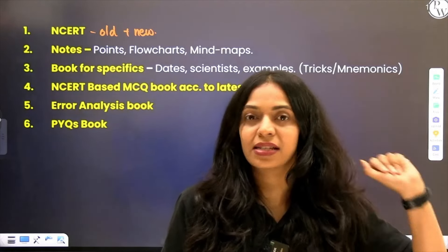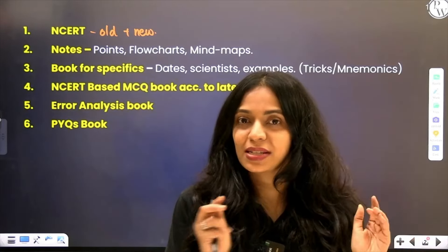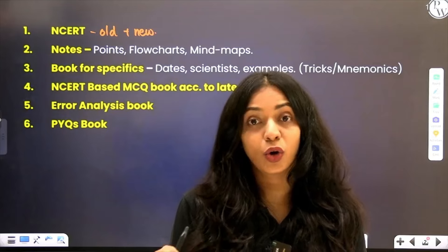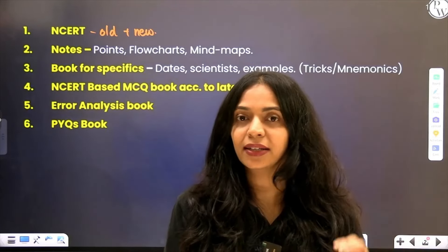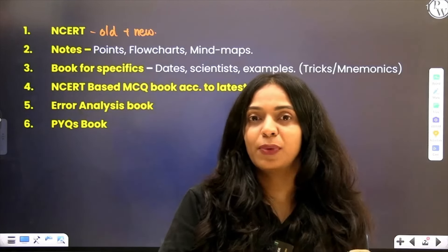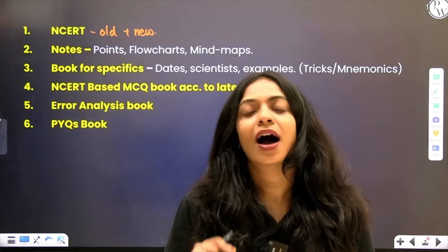In Organisms and Populations, the concept 'Organism and its Environment' — an entire concept — has been deleted in the new textbook. It is available only in the old textbook and it is part of your NEET syllabus. So for such chapters, it would be ideal to refer the old textbook because they are important concepts from which questions may be asked.